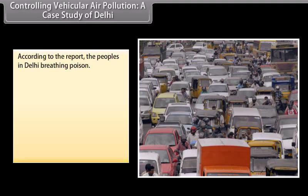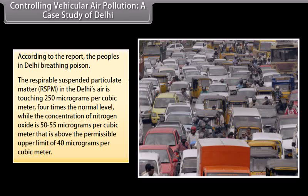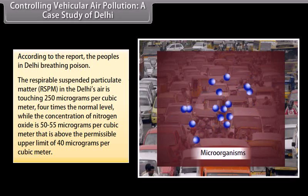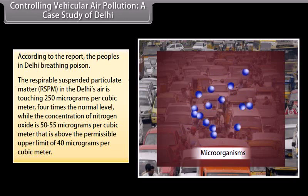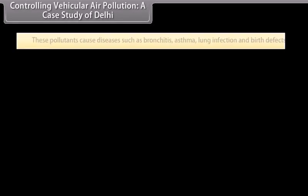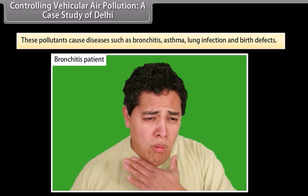According to the report, the people in Delhi are breathing poison. The respirable suspended particulate matter (RSPM) in Delhi's air is touching 250 micrograms per cubic meter — 4 times the normal level — while the concentration of nitrogen oxide is 50 to 55 micrograms per cubic meter, above the permissible upper limit of 40 micrograms per cubic meter. These pollutants cause diseases such as bronchitis, asthma, lung infection, and birth defects.